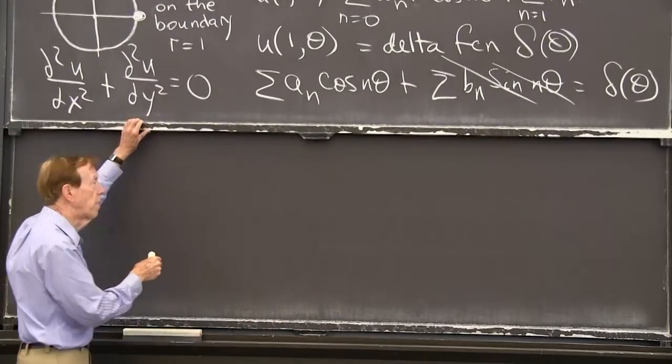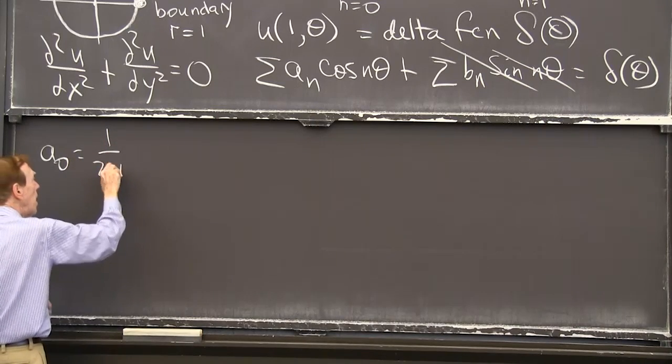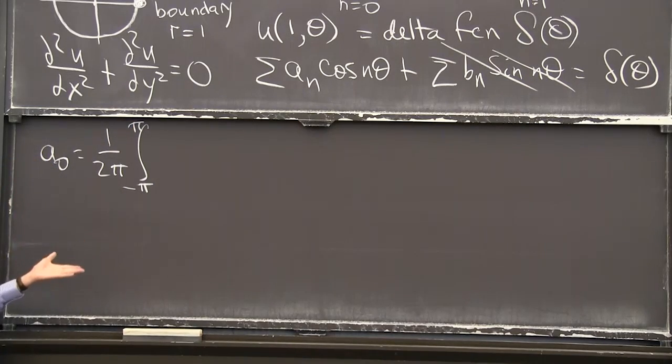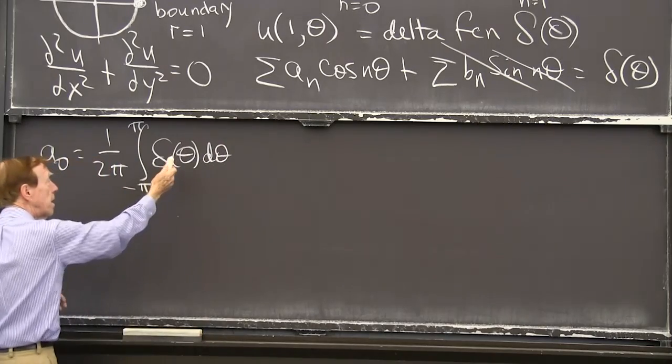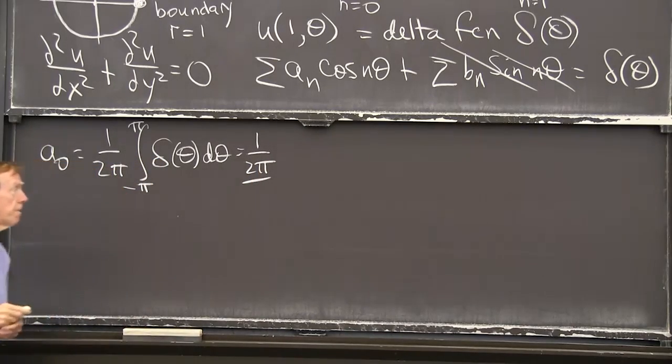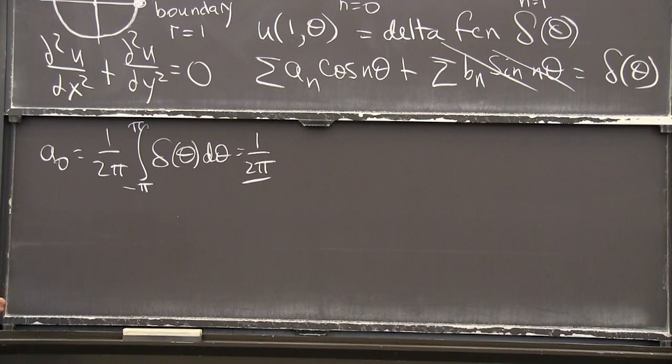So let me just remember that formula. The formula was a_0 was 1 over 2π times the average. a_0 is the average value of the temperature. And the temperature on the boundary is delta theta. And that integrates to 1. And we get the answer 1 over 2π. That's the average temperature. Isn't that a little weird? The temperature is 0 except at one point. At that point, it's a delta function with the coefficient 1 outside it.